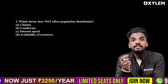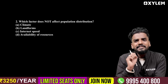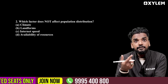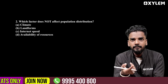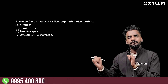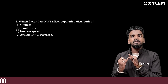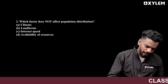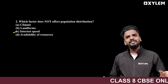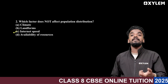Which factor does not affect population distribution? Population distribution is affected by climate and landforms, which are important factors. Internet speed is not a factor that affects population distribution — internet speed is the right answer to what does NOT affect it.